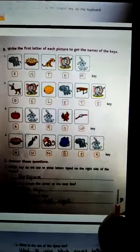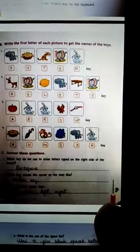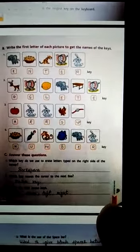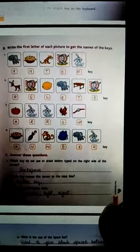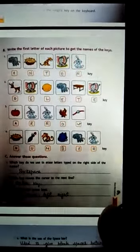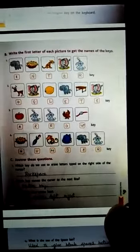Come to the next page. Write the first letter of each picture in the given boxes to get the names of these keys. The pictures given below - for their first letter, you have to write the capital letter.